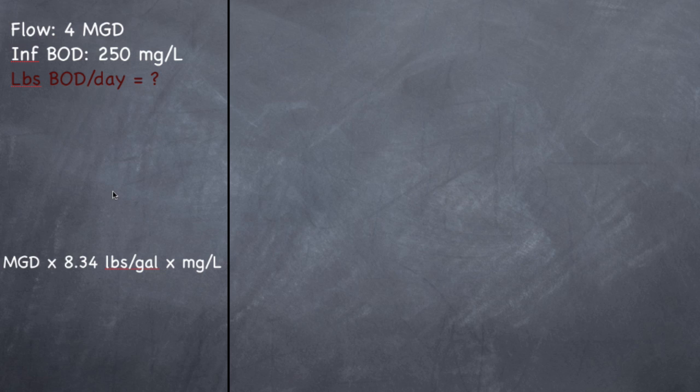But we're not going to use that. We're going to use our pie chart because that helps operators out. So I want you to go ahead and draw out your circle, your pie, and I want you to fill it in with all this information. I want you to fill it in with your flow and your BOD concentration, and that 8.34 pounds per gallon. And when you're done, it should look something like this.